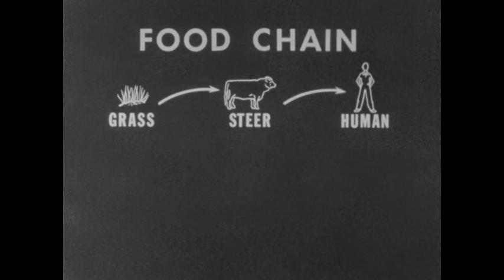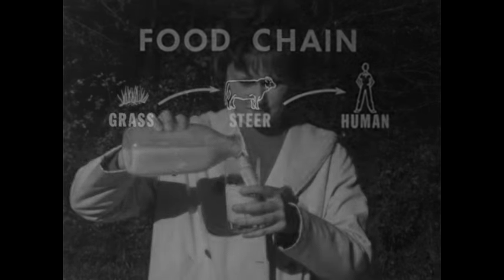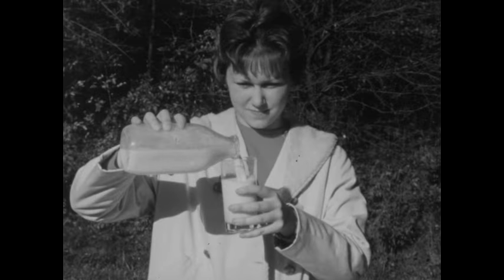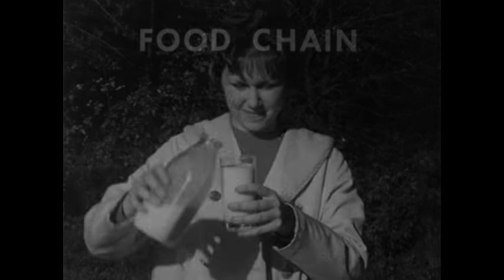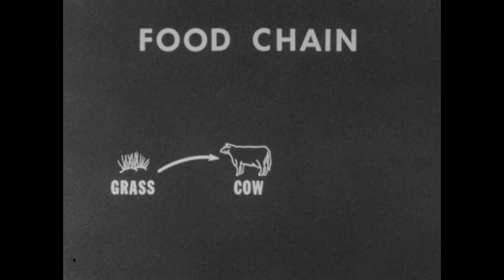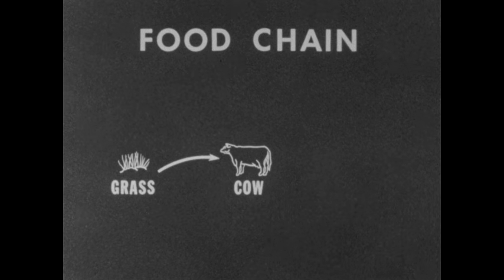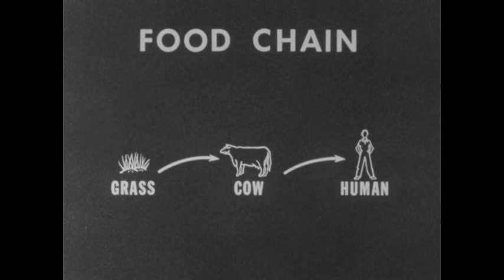Let's trace a similar chain for the milk we drink. For this particular food chain, grass would again be a link. Grass is eaten by a cow, which provides milk. Milk is consumed by a human.